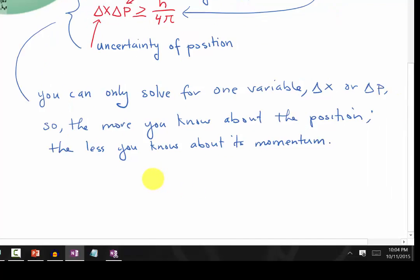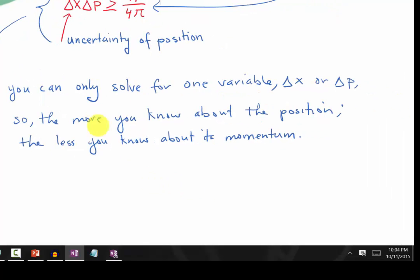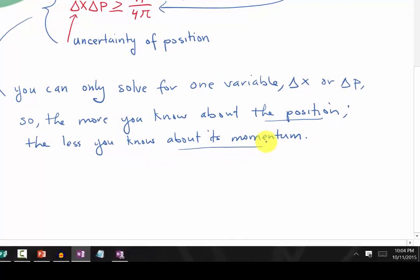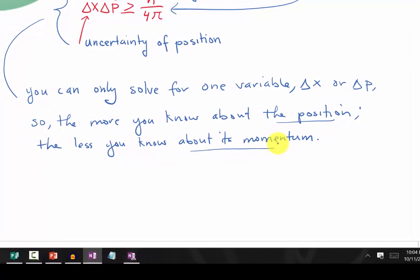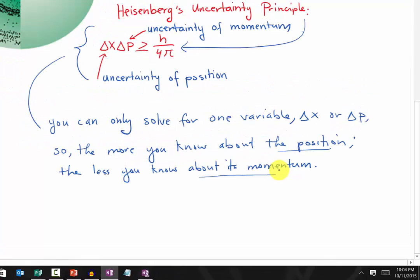So what does that mean? That means the more you know about the position of an electron, the less you will know about the momentum of an electron. Or the other way around — the more you know about the momentum, the less you know about the position of an electron, because you can only solve for one variable at a time.